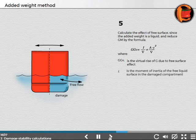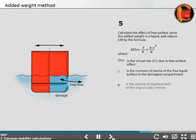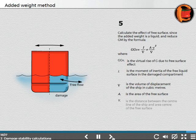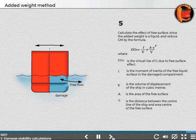Where I is the moment of inertia of the free liquid surface in the damaged compartment, ∇ is the volume of displacement of the ship in cubic meters, A is the area of the free surface, and Y is the distance between the centerline of the ship and area center of the free surface.